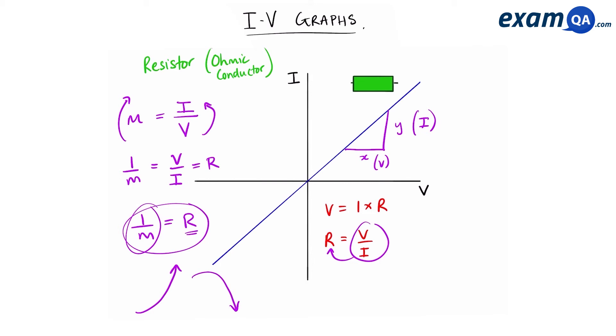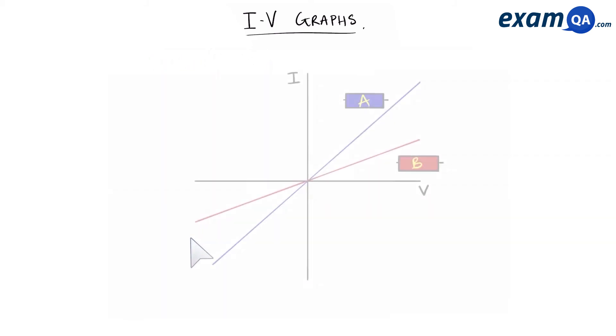So let's have a look at a question. Here are two IV graphs of two different standard resistors. Out of these two, which one would you say has higher resistance? So we know that resistance is 1 over the gradient, which means that the resistance is inversely proportional to the gradient.